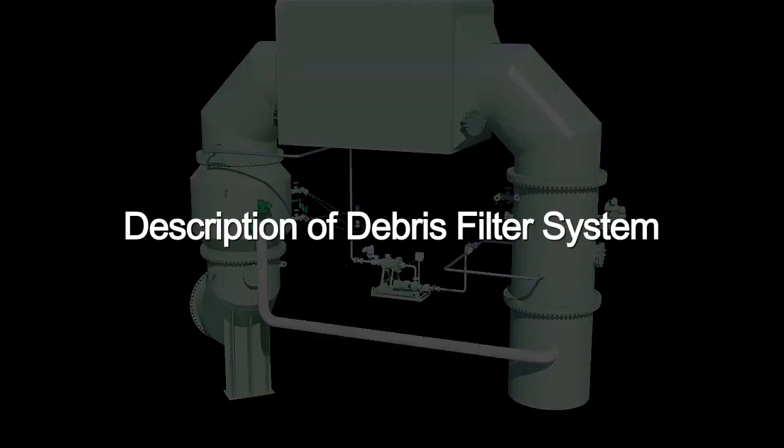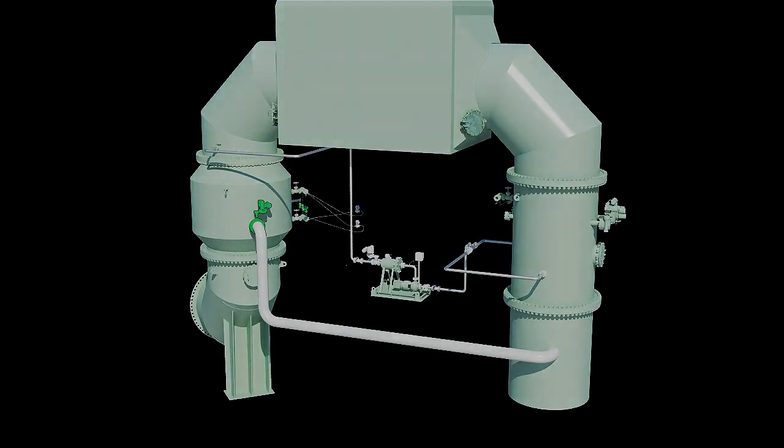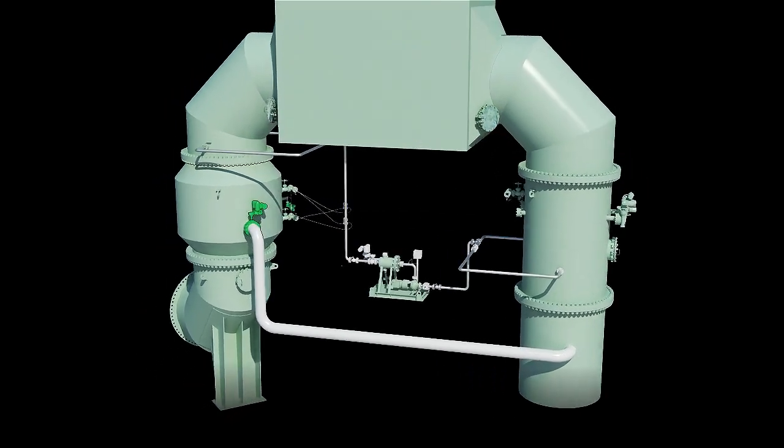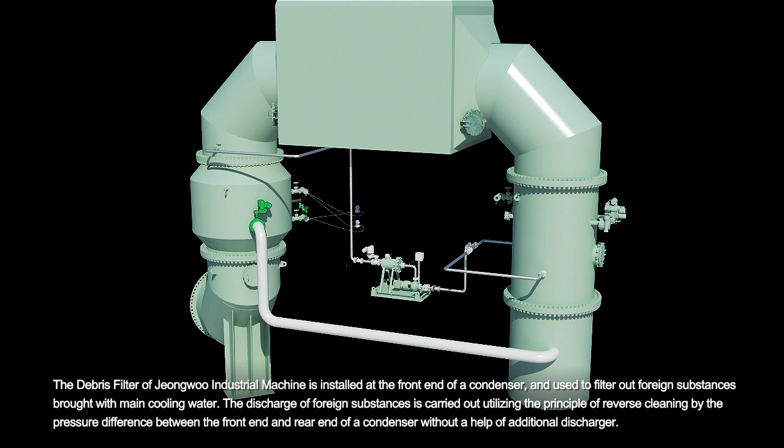Description of Debris Filter System. The debris filter of Jungwoo Industrial Machine is installed at the front end of a condenser and used to filter out foreign substances brought with main cooling water.